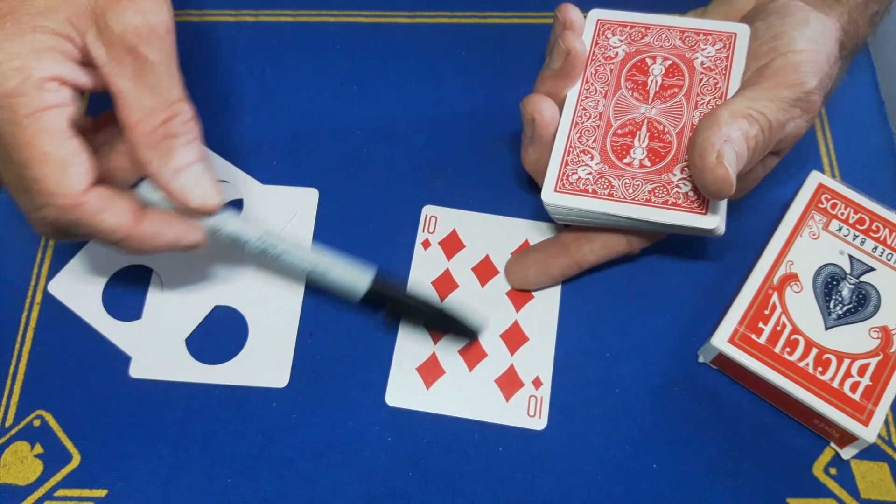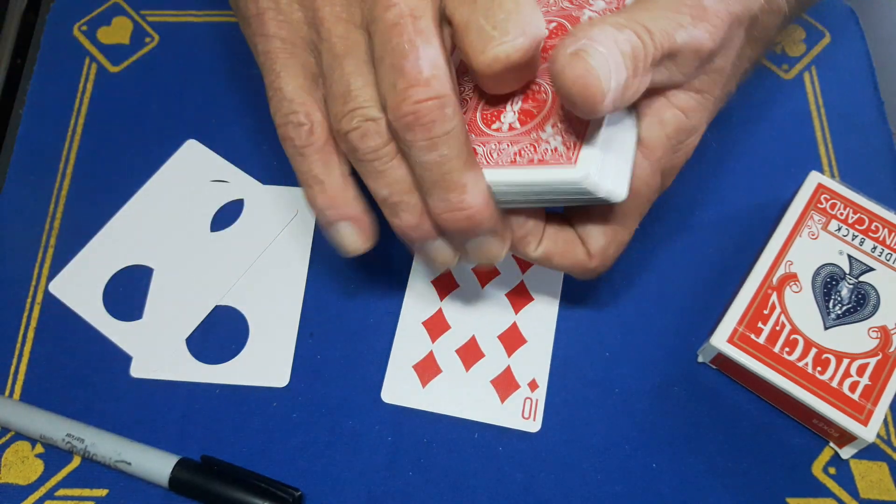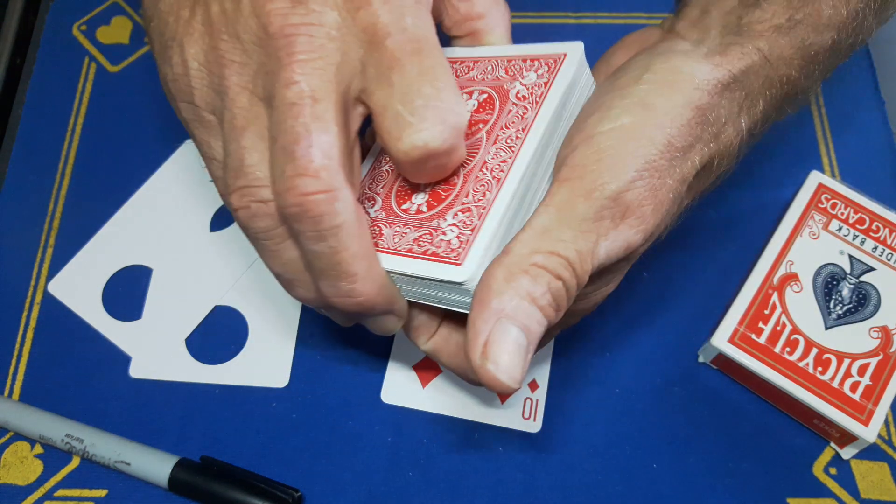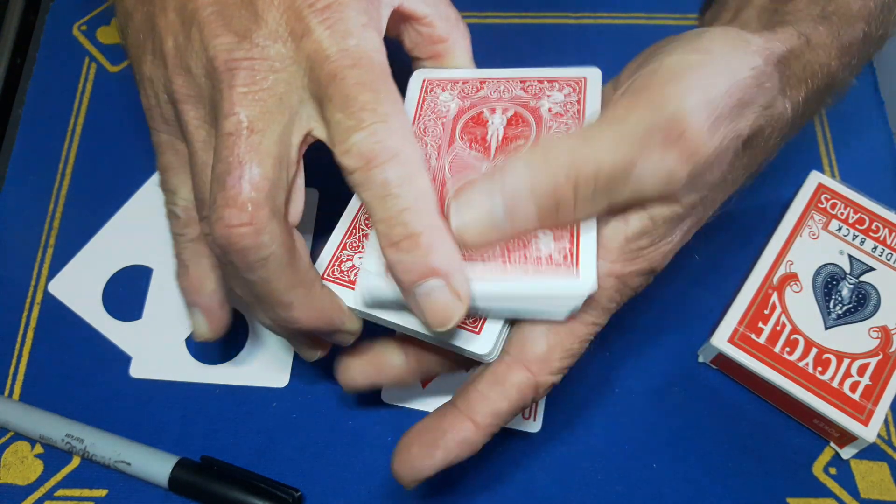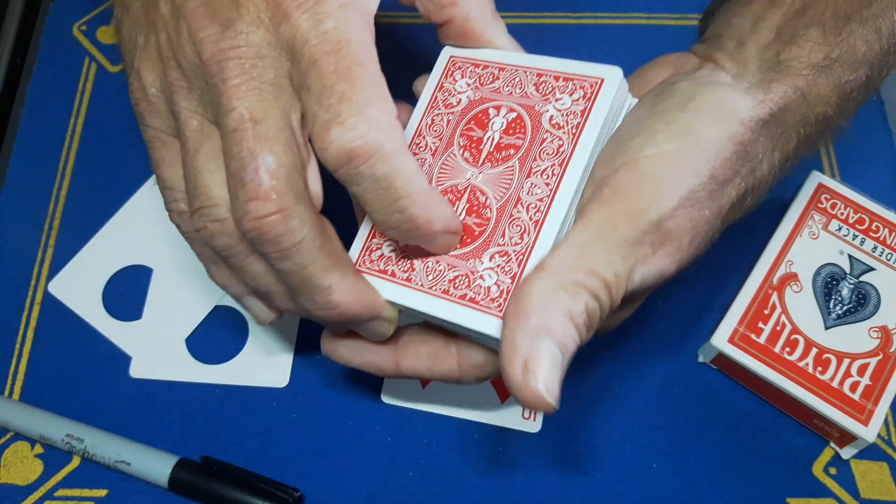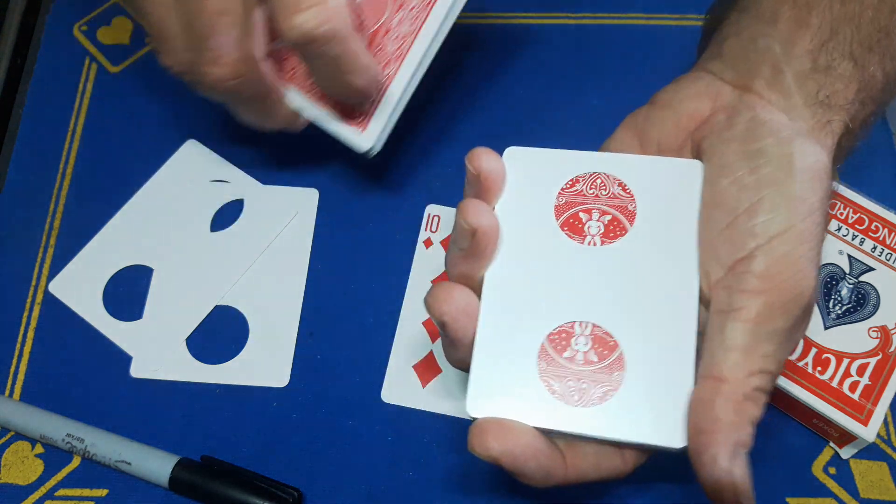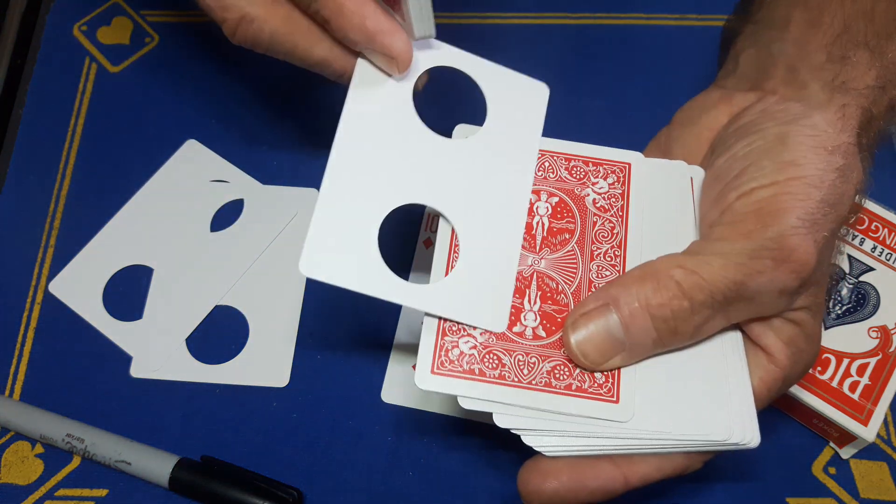Right here, the ten of diamonds. I want you to sign the ten. I'm not going to sign this ten, but while they're signing the ten you're going to get a little thumb break under the bottom card. You are then going to swing cut the top portion, put these two cards together maintaining that break.